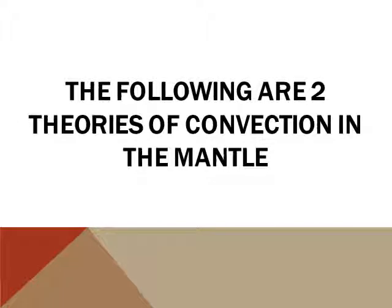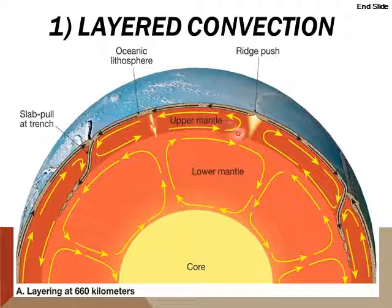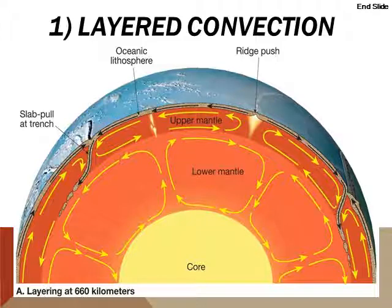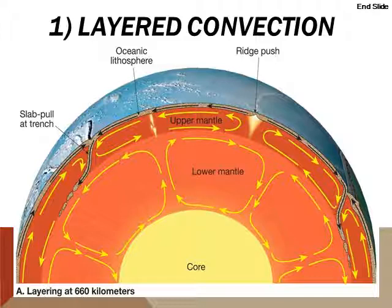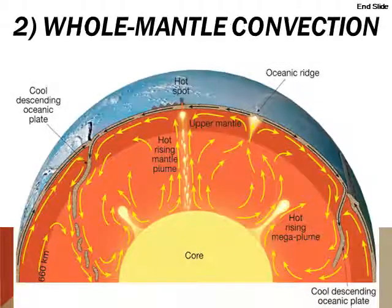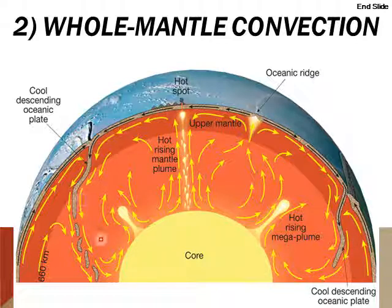There are two leading theories on how convection occurs in the mantle. The first theory is referred to as layered convection. Essentially, you get the top layer of the mantle — referred to as the asthenosphere — which has its own convection currents and causes the lithosphere to move along with them. Then the lower mantle has its own convection currents, and those release heat into the asthenosphere, which has its own convection currents as well. The second type is called whole mantle convection — basically one big convection current inside the mantle rather than two layers.